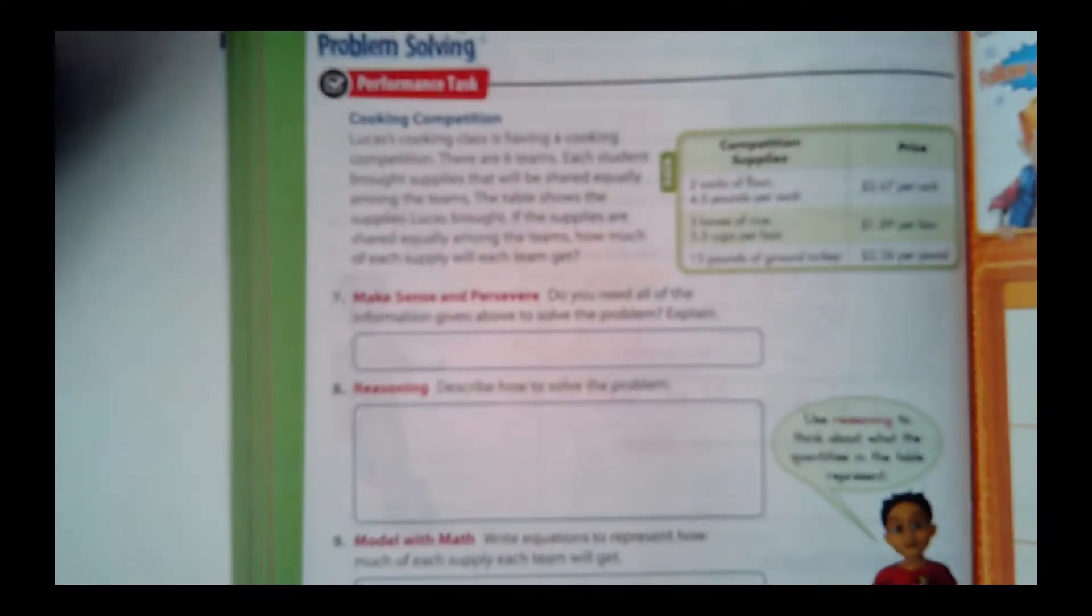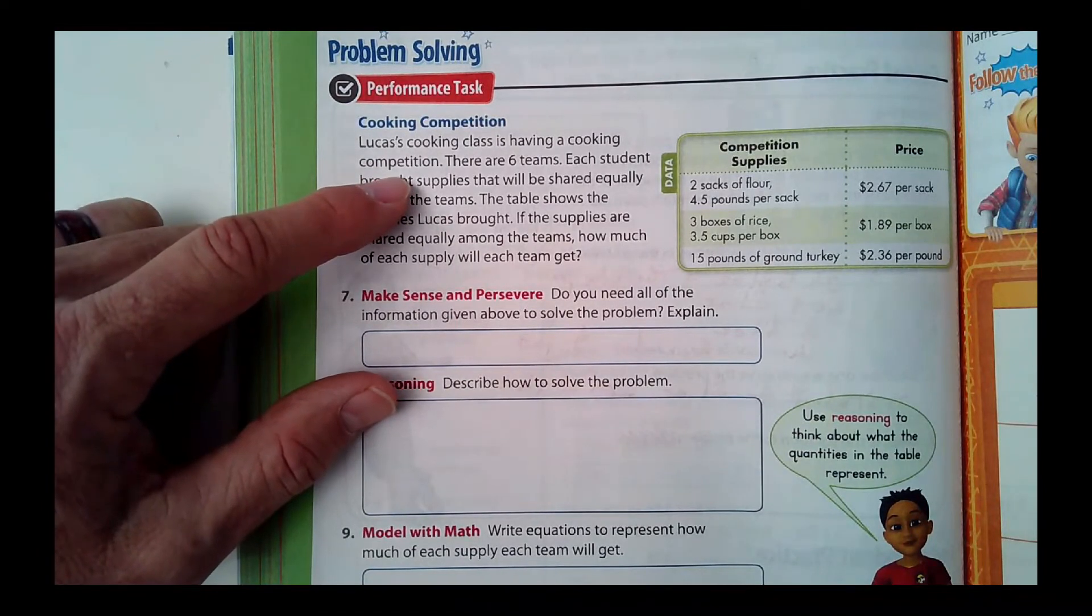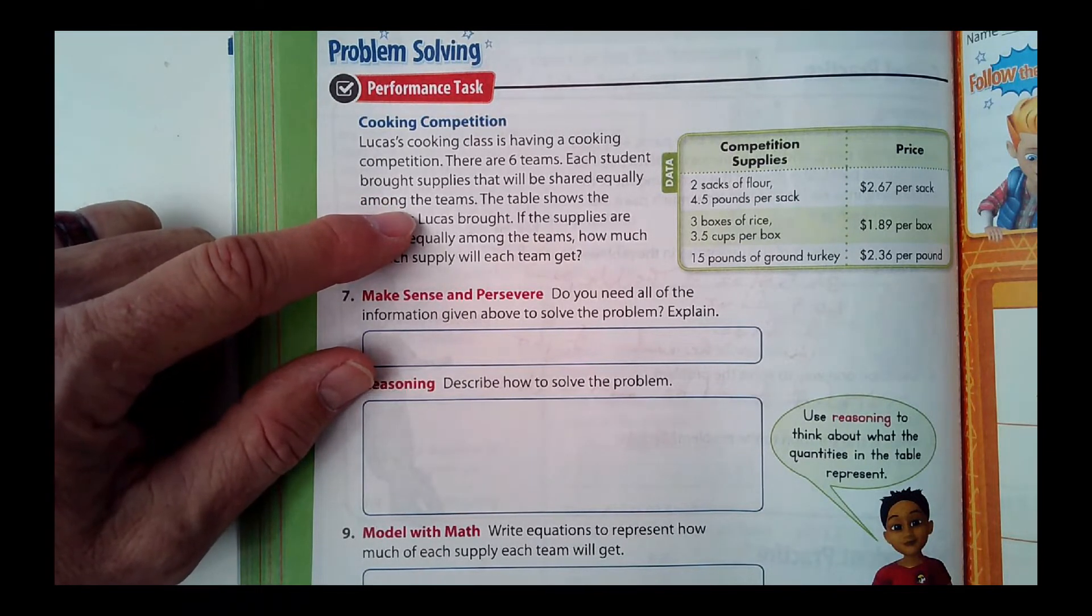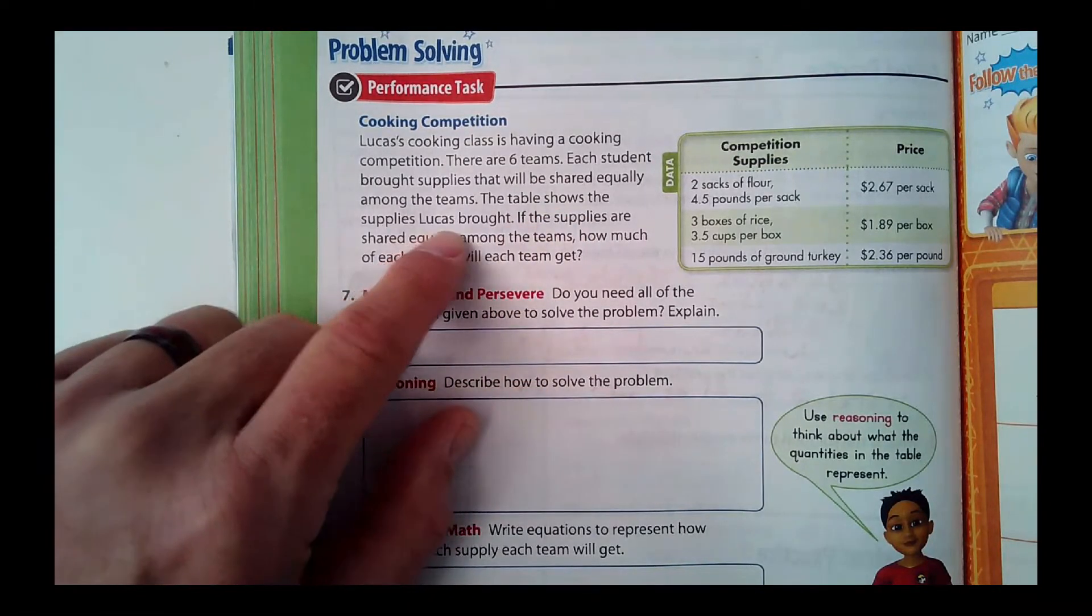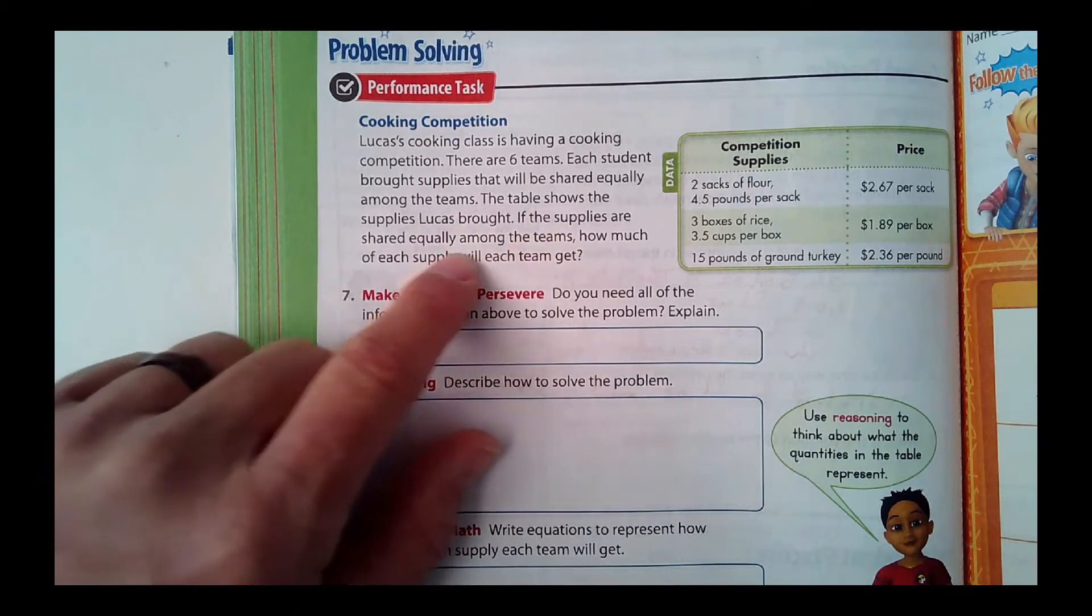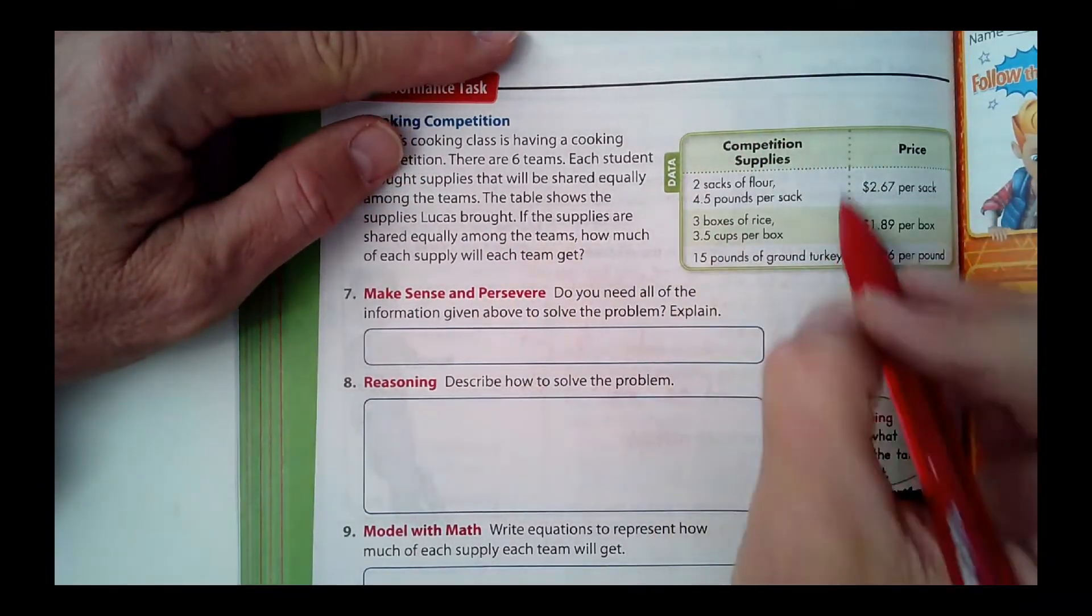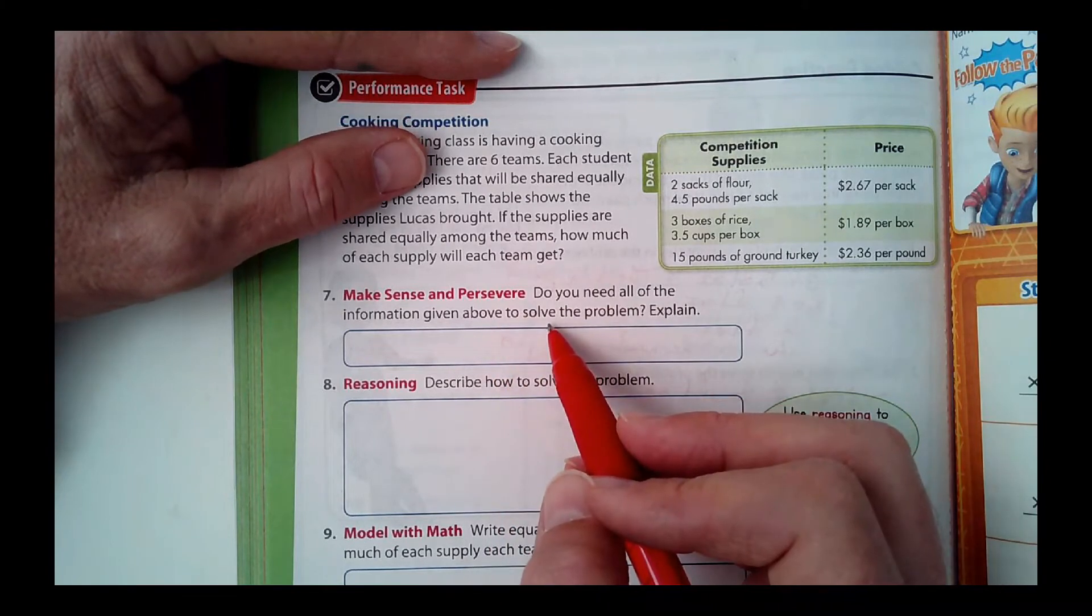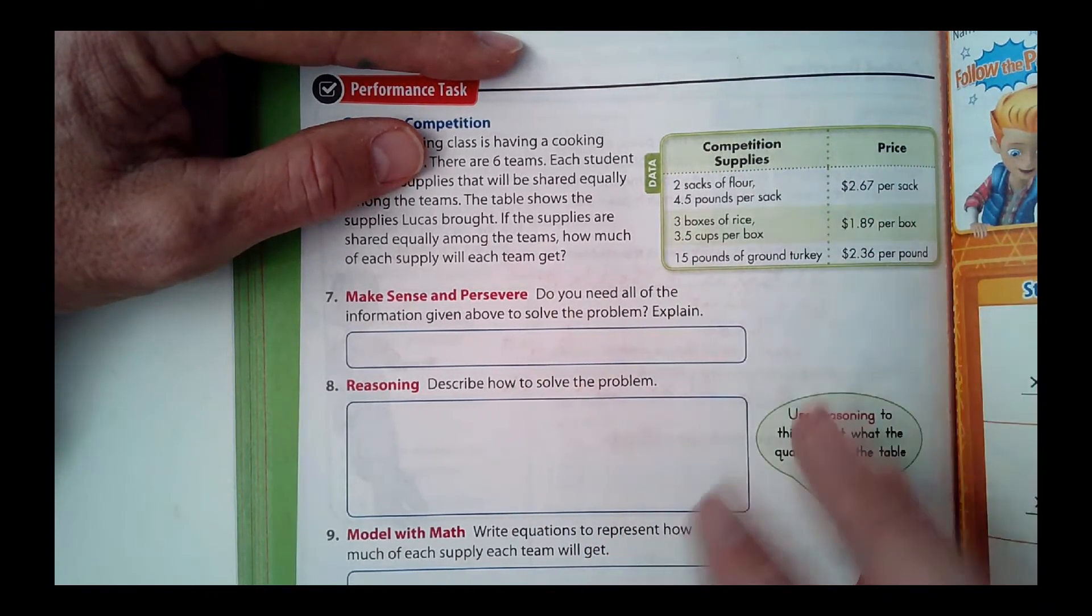Page 252, it says Luca's cooking class is having a cooking competition. There are six teams. Each student brought supplies that will be shared equally among the team, so whatever the ounces or pounds of supplies, that's going to be probably divided by six. The table shows the supplies Lucas brought. If the supplies are shared equally among the team, how much of each supply will each team get? Here's the table of supplies, and then they give us the price here. First question says do you need all of the information given to solve the problem?